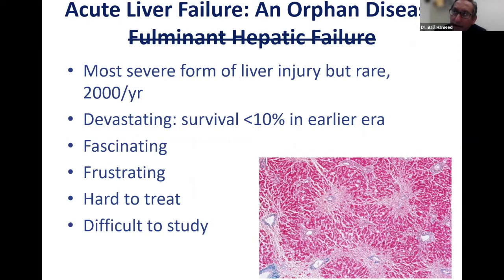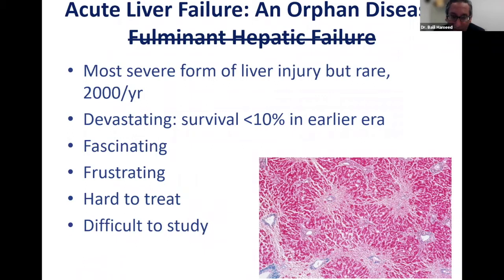In the earlier era, when we didn't have liver transplant or better ICU and critical care, these patients had a very poor survival of less than 10%. Clinically, studying this disease is very fascinating but also very frustrating, because it's hard to treat and even more difficult to study — NIH-funded studies were very hard to enroll because we didn't have that many patients.